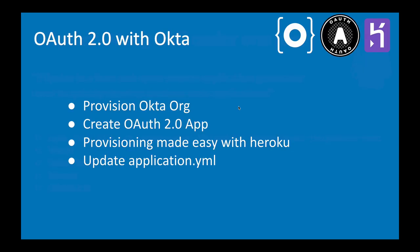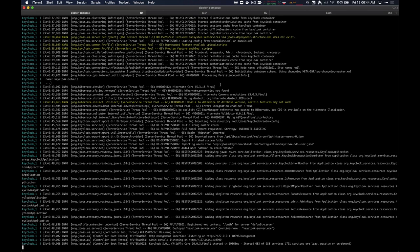The next thing is to switch from KeyCloak over to Okta. We're going to provision an Okta org and create an OAuth app within Okta, made really easy with the Okta Heroku add-on that I built. Ordinarily you'd have to go to Okta, sign up for an org, get an email, reset your password, then go into your Okta org and create an OpenID Connect and OAuth application. When you use the Heroku Okta add-on, it does all of that for you.